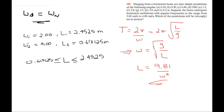We're looking for which pendulum lengths fall between 0.6125 meters and 2.45 meters. Looking at the list, pendulum D (0.80 m) and pendulum E (1.2 m) are both within this range, so D and E will be strongly set in motion due to resonance.